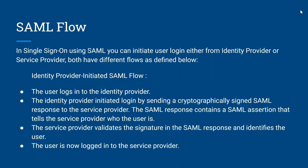We are going to discuss the first one, that is identity provider initiated SAML flow. In this flow, the first step is the user logs into the identity provider. The identity provider initiates login by sending a cryptographically signed SAML response to the service provider. The SAML response contains a SAML assertion that tells the service provider who the user is.